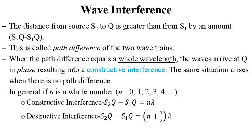When the path difference equals a whole wavelength, the waves arrive at Q in phase, resulting into constructive interference, what we had discussed earlier. The same situation arises when there is no path difference. That is, if we had been enough with this n as zero.